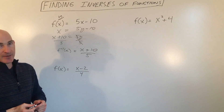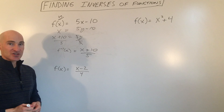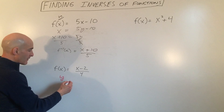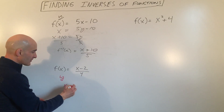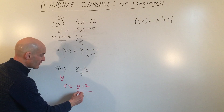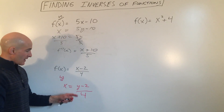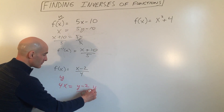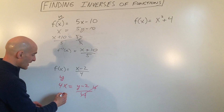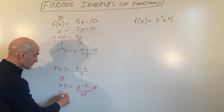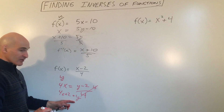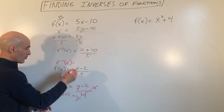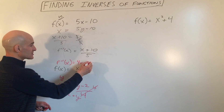Let's take a look at another example: f of x equals x minus 2 divided by 4. I'm going to think of this as y, then switch the x and the y. So x equals y minus 2 divided by 4. Now I'm going to solve for the new y — multiply both sides by 4, then add 2. So this is f inverse of x equals 4x plus 2.